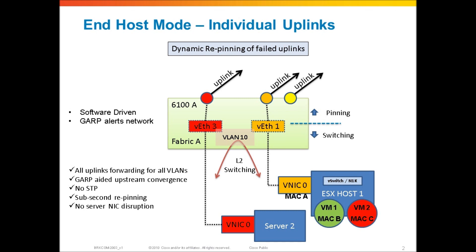We've got an ESX host running a vSwitch or 1000V with a couple of VMs on it, and there's also Server 2 with vNIC0 pinned. This would be all dynamic pinning. Server 2 is pinned to the red uplink, and the ESX host is pinned to the orange uplink. These VMs are going to be steered out of vNIC0 for their upstream traffic. Because vNIC0 is pinned to the orange uplink, both VM1 and VM2 are using the orange uplink.